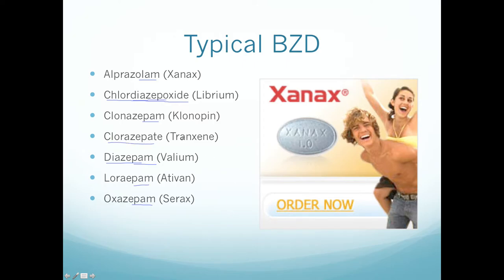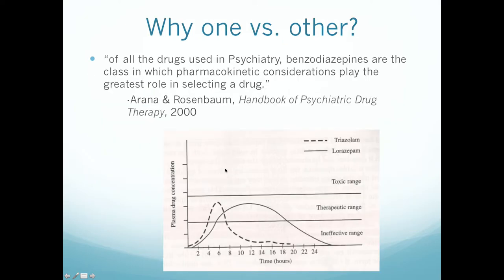To spot a benzodiazepine on an exam, if a drug name ends in -PAM or -LAM, it's most likely a benzodiazepine. The first compound ever made was chlordiazepoxide, sold as Librium — it doesn't end in -PAM or -LAM, but contains 'diaza.' Diazepam is one of the top three most common benzodiazepines. Clorazepate, sold as Tranxene, is also an exception you'll need to memorize.